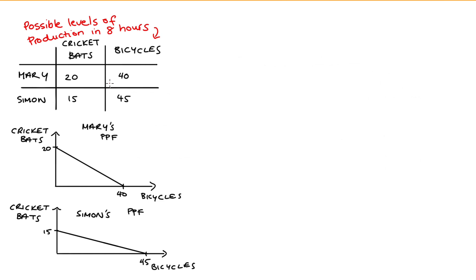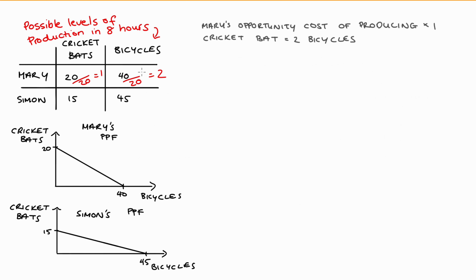From our table, we can see that if Mary makes 20 cricket bats, she essentially gives up 40 bicycles. I'm going to normalize this trade-off to one: 20 over 20 equals one, and I need to divide the other side to keep the ratio, so 40 over 20 is two. The opportunity cost — what Mary gives up when she makes one cricket bat — is equal to two bicycles.